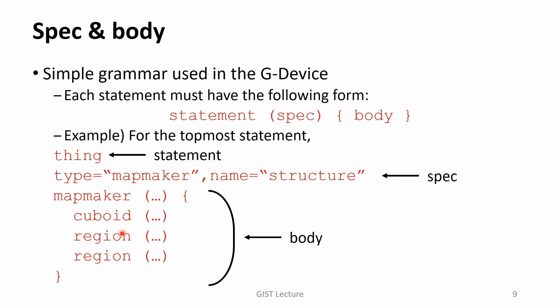Each statement in the G device must have the following form. The spec is used to initiate the related C++ object. On the other hand, the body is used to describe the object in a detailed way. For example, for the topmost statement, thing is the statement. Its spec is type equal to mapmaker and name equal to structure. With this spec, we can initiate a mapmaker type thing. After that, further description is made in its body, where a nested statement — mapmaker — is found.